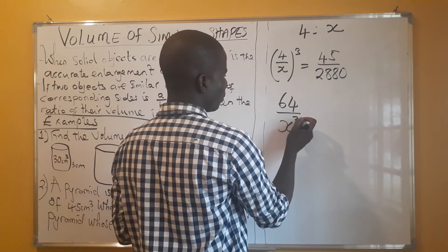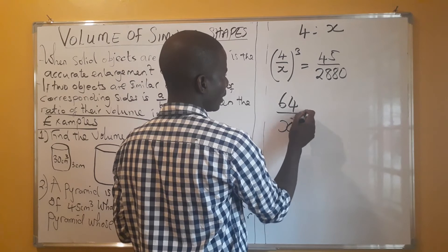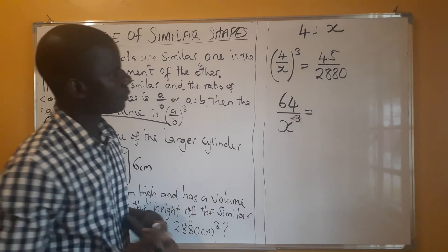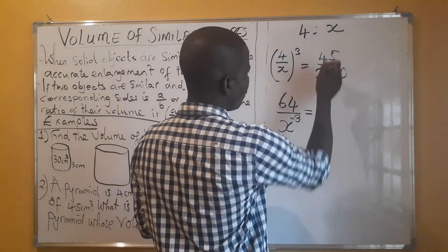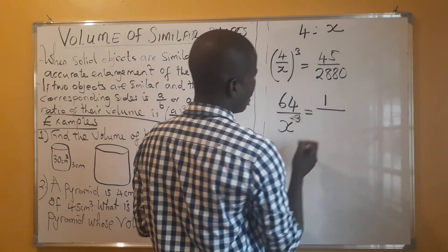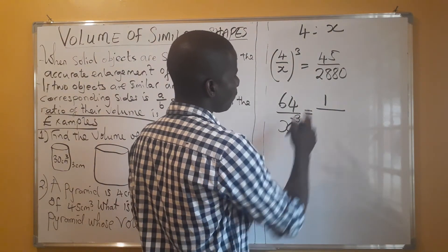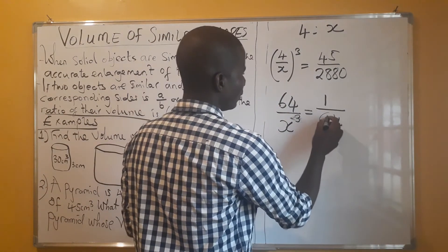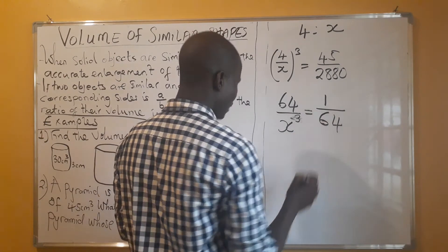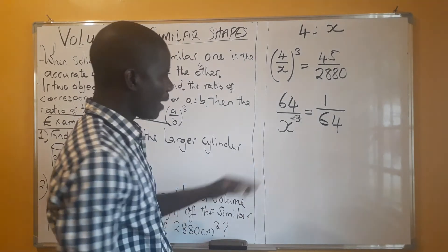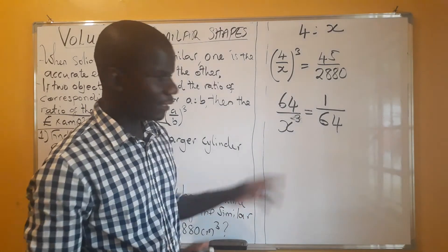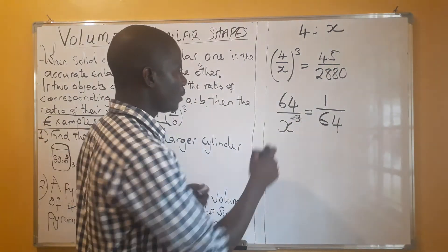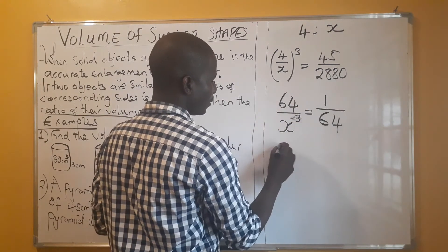This is paper one so we do not use a calculator — you have to simplify. On the volume side, 45 into 45 is 1, and 45 into 2880 is 64. So we have 64/x³ = 1/64. Now we cross multiply: x³ × 1 = x³, and 64 × 64 = 4096.